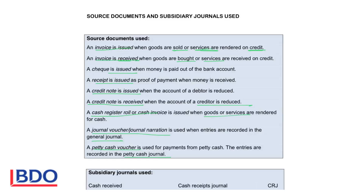What is very important is that you must look at whether a document is received or issued. An invoice issued is when you sell goods — it goes to your debtors. An invoice received comes from your creditors. Similarly, a credit note issued goes to debtors, and a credit note received comes from your creditors.